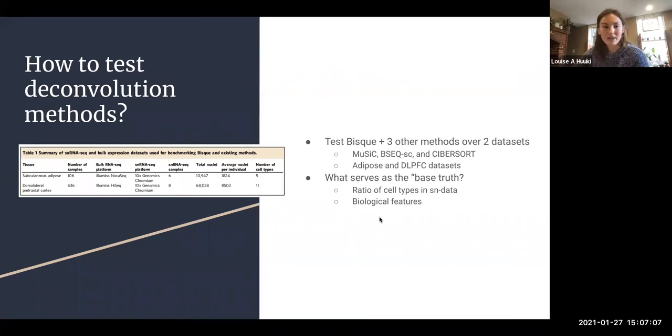Then they move on to testing deconvolution methods, which is something we've been asking as a group—how do we see if our deconvolution method worked? That's something we're working on with our work with Music right now. They have two datasets: subcutaneous adipose tissue and dorsal lateral prefrontal cortex (DLPFC). They're going to test Bisque and three other methods—Music, BSeq-sc, and CibersortX—over these two datasets.